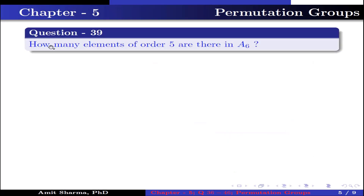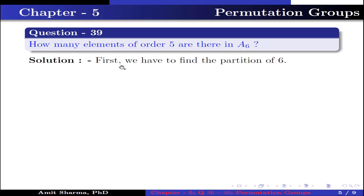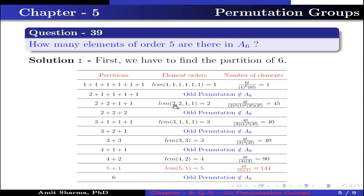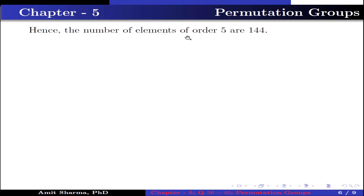Question number 39. How many elements of order 5 are there in A6? We find the partition of 6. The partition 5 + 1, which has LCM 5, gives the number of elements of order 5, equal to 6! divided by (5 × 1) = 144, because the 5-cycle appears one time and the 1-cycle appears one time. Hence the number of elements of order 5 is 144.